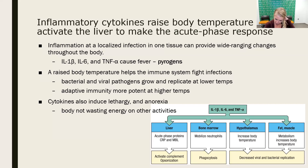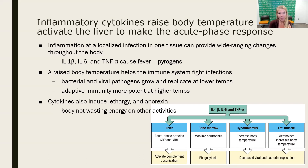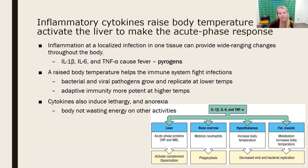A raised body temperature, or fever, is often thought of as something we want to get rid of, but fever is actually really beneficial for the immune system. A higher temperature isn't great for bacteria — pathogens tend to prefer a slightly lower temperature, so increasing body temperature actually slows down bacterial processes. It also speeds up the immune system's metabolism and ability to produce cytokines, so a raised body temperature can actually help fight infections.